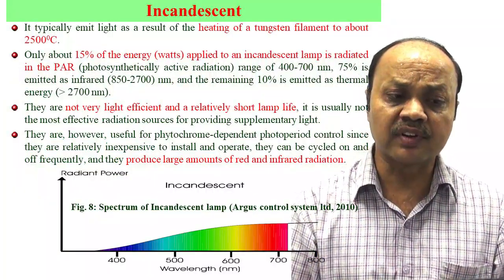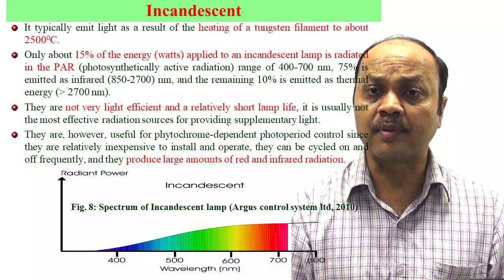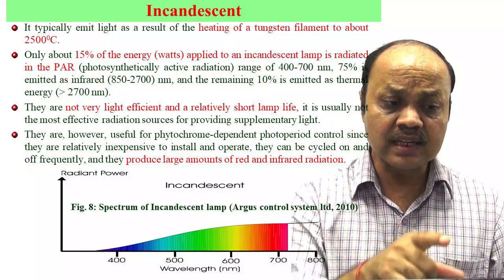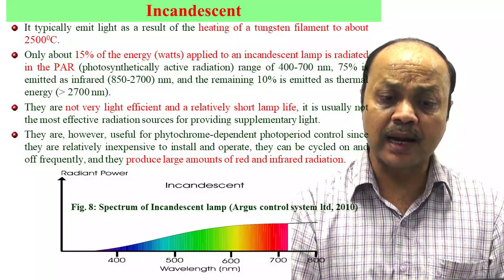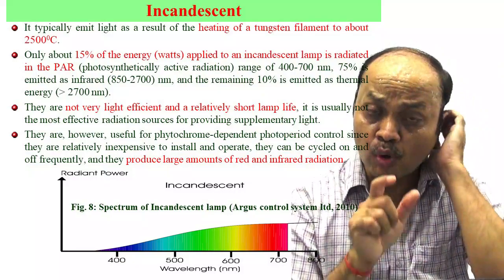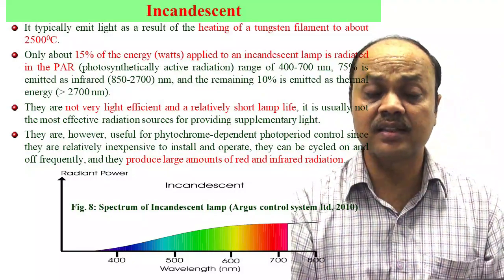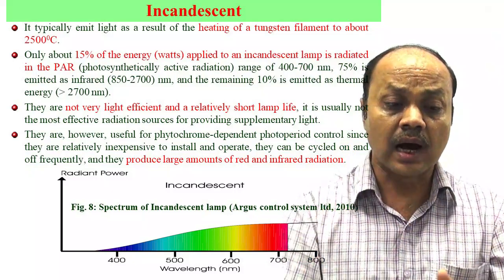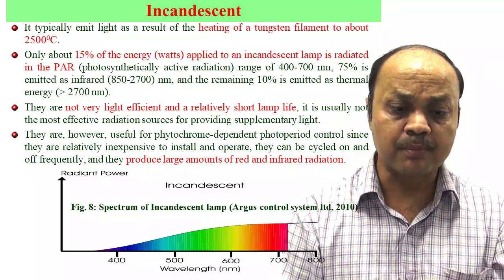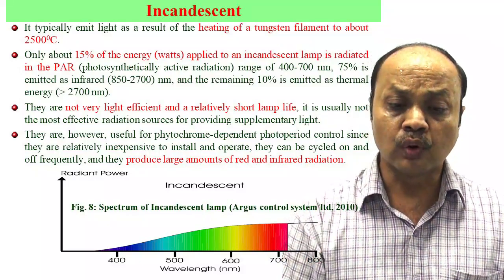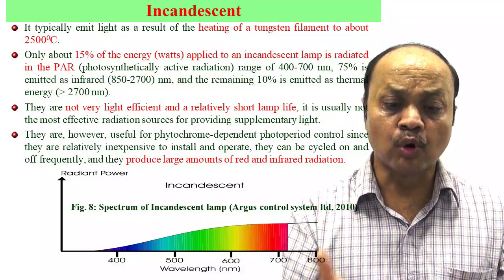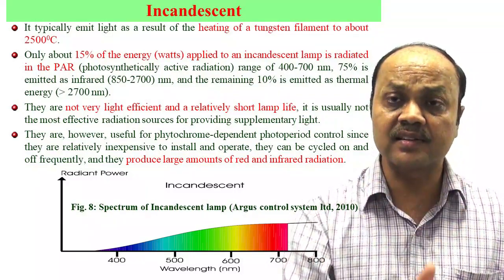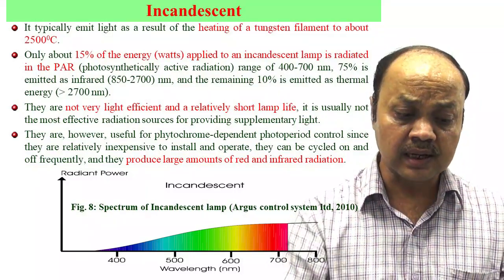In an incandescent lamp, tungsten is heated to about 2500 degrees C. Only 50% of energy applied is radiated in the PAR range. The other portions are in the infrared range — 75% between 850 to 2700 nm and the remaining above 2700 nm. So from the full spectrum, the incandescent lamp provides only about 15% of light in the PAR range.